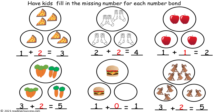This is the completed example. One slice of pizza plus two slices equals three slices. Two socks plus two socks equals four socks. One apple plus one apple equals two apples. Three carrots plus two carrots equals five carrots. One hamburger plus zero hamburgers equals one hamburger. And three dogs plus two dogs equals five dogs.